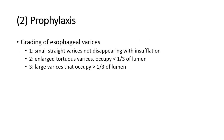Esophageal varices can be graded according to size into three grades. Grade 1 is defined by small, straight varices that do not disappear with insufflation. Grade 2 is when the varices are enlarged and tortuous, occupying less than one-third of the lumen. Grade 3 is when they occupy more than one-third of the esophageal lumen. This grading helps predict the risk of variceal hemorrhage.